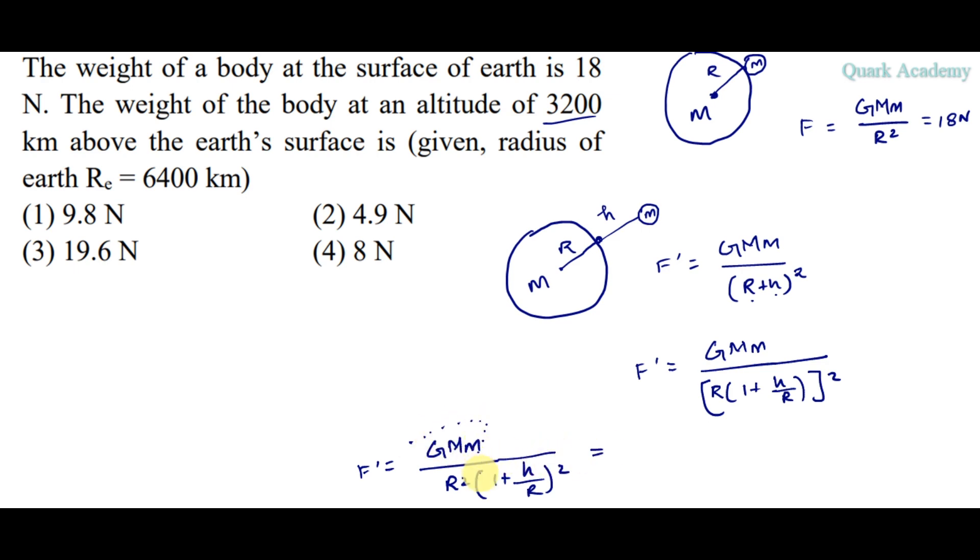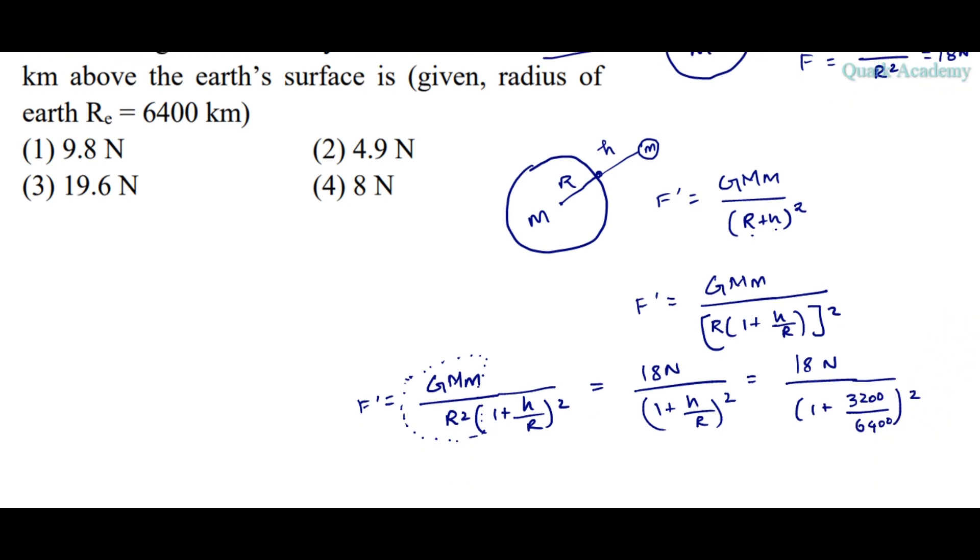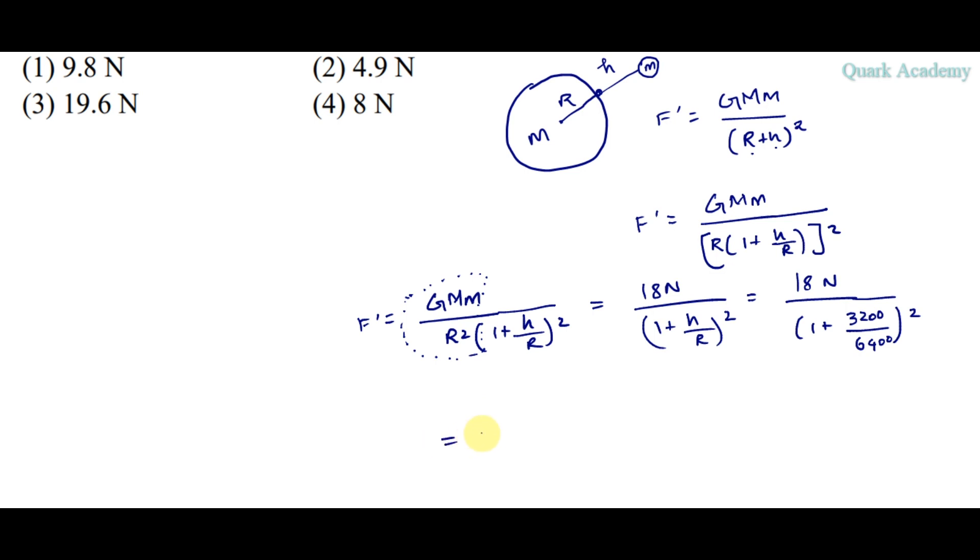F prime will become G M m by R square, which is equal to F, 18N divided by 1 by R whole square. H and R value substitute. 18N divided by 1 plus H, which is 3200 km, R is 6400 km, whole square.